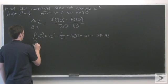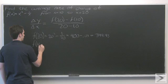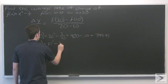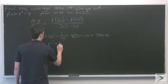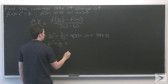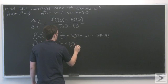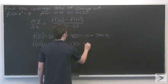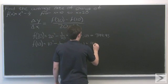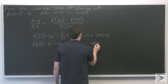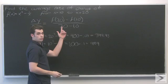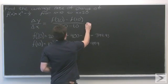Now f of 10: 10 squared minus 1 over 10 is equal to 100 minus 0.1, or 99.9. So now we can plug these values back into our formula and see what we get.